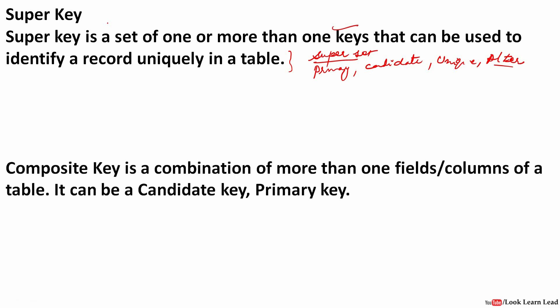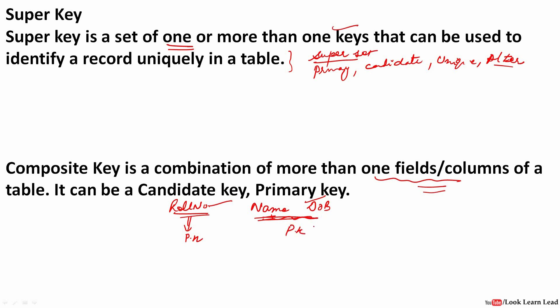The next is the composite key. A key with one attribute is a single key. A composite key is a key which contains more than one attribute — more than one field, column, or attribute. It can be a candidate key or a primary key. For example, suppose roll number alone is sufficient to be a primary key. But if we combine name with date of birth — name alone is not a primary key, date of birth alone is not a primary key — but combining name and date of birth can make it a primary key. Any key which has more than one attribute is called a composite key, also known as a compound key.